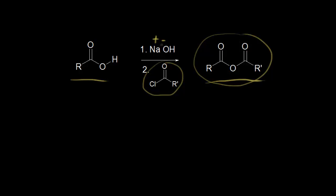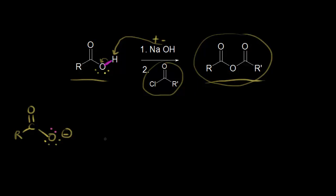If you think about the mechanism, sodium hydroxide is a base. The hydroxide anion is going to take this proton, leaving these electrons behind on the oxygen. There are already two lone pairs of electrons on the oxygen to start with. So if we draw the product, we would form a carboxylate anion. This oxygen would have three lone pairs of electrons on it with a negative one formal charge. Those electrons in magenta come off onto our oxygen to form our carboxylate anion, and that's going to function as our nucleophile.